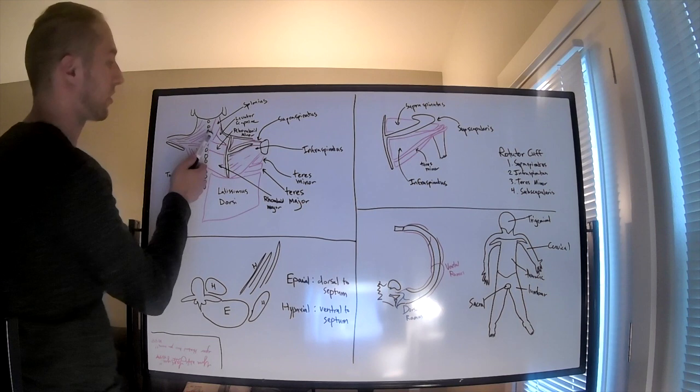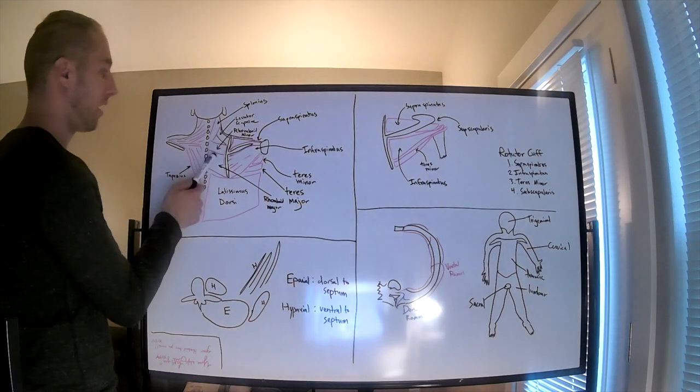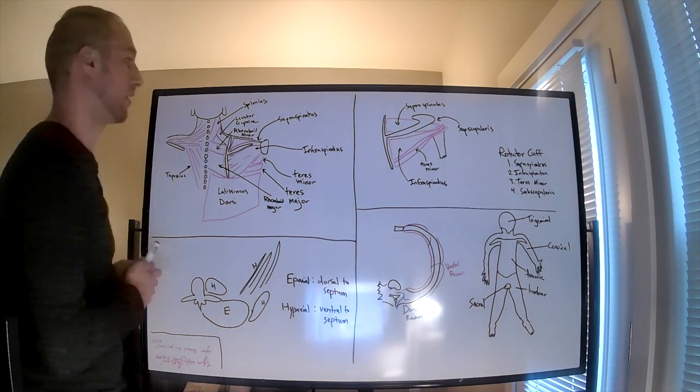Starting from the top, we have the splenius muscle, then we have the levator scapulae and the rhomboid minor and major. In many patients these are mostly indistinguishable.